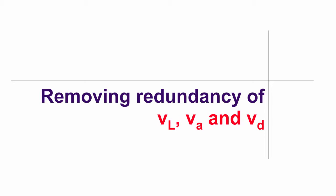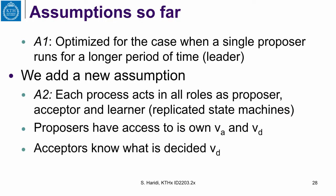The current algorithm is designed so that proposers with the leader among them, acceptors and learners are separate concurrent processes. If we can have each process playing the role of proposer, acceptor and learner, then we can remove redundancy between these sequences: VL, VA and VD. So far we have a single optimization, which is the algorithm is optimized for the case when a single proposer runs for a longer period of time and that proposer is a leader.